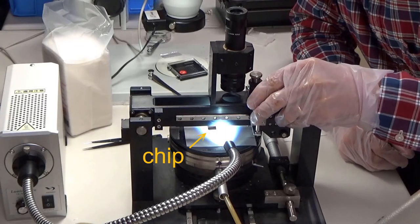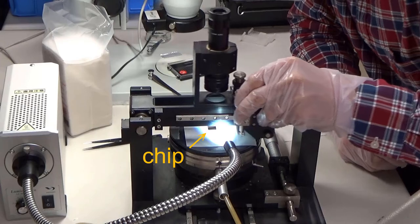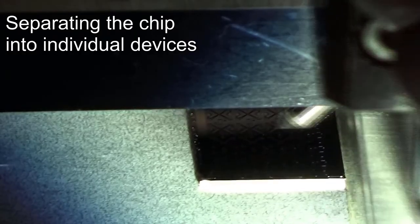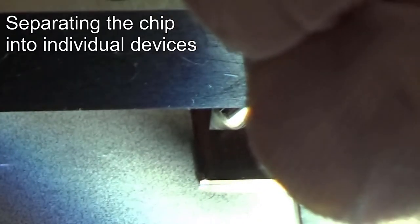The next step is to cut the chip into individual devices. We again use a diamond-tipped tool to scribe the surface.